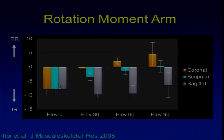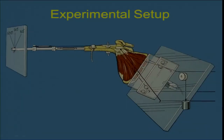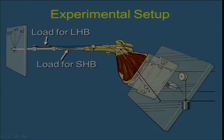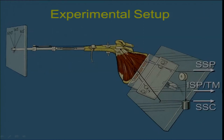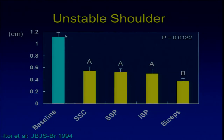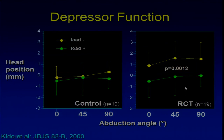Regarding the rotator function of the biceps: if you elevate the arm in the coronal plane — that is, abduction — the biceps changes from internal rotator to external rotator. But if you flex the arm forward, it always remains an internal rotator. As for the stabilizing function, when the shoulder is unstable anteriorly, the function of the biceps is significantly greater than that of the rotator cuff muscles. Also, during arm elevation in cuff tear patients there is superior migration of the humeral head, but applying load to the biceps restricted this migration — so it functions as a depressor of the humeral head.